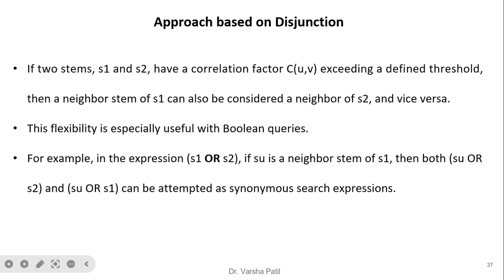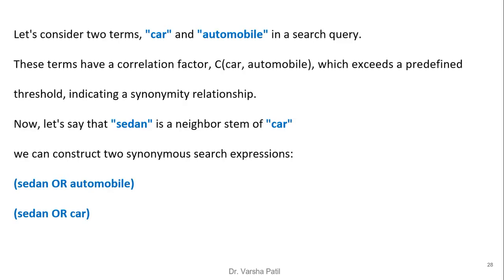Approach based on disjunction: if two stems s1 and s2 have a correlation factor exceeding a defined threshold, they are very close to each other. A neighbor of stem s1 can also be considered a neighbor of s2 and vice versa — this increases the range of keywords. This flexibility is especially useful in Boolean queries. For example, if the expression is s1 OR s2 and su is a neighbor of s1, then we can use 'su OR s2' as a synonymous search expression. Consider 'car' and 'automobile' — they exceed the correlation threshold, indicating they are very synonymous. If 'sedan' is a neighbor of 'car,' we can construct two synonym search expressions: 'sedan AND automobile' and 'sedan OR car.'